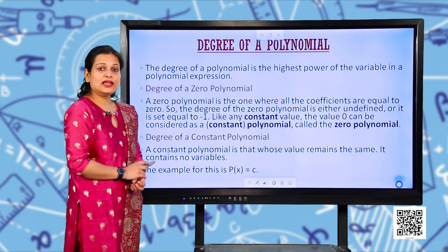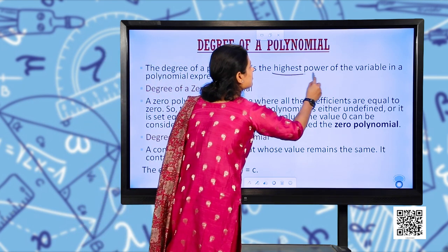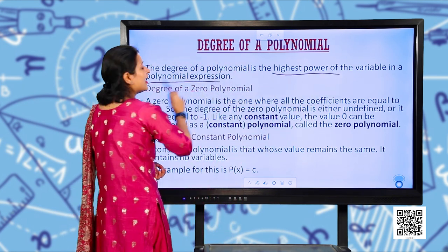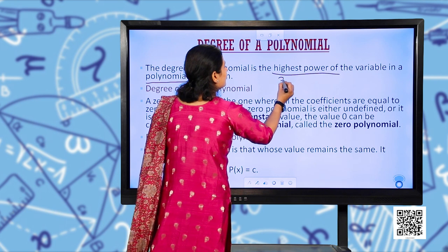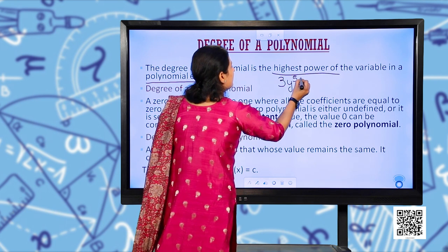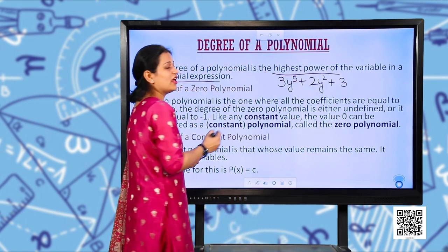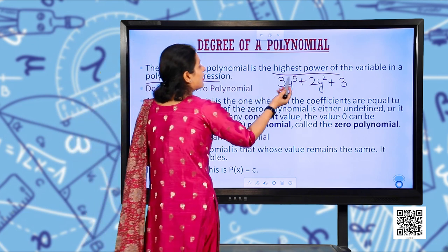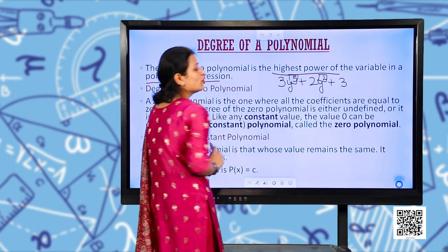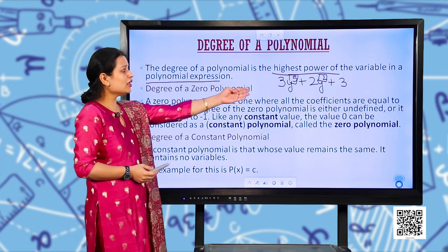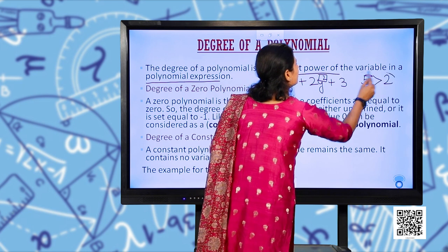Now let's look at the degree of a polynomial. The degree of a polynomial is the highest power of the variable in the polynomial expression. For example, if I have 3y⁵ + 2y² + 3, the variable is y with powers 5 and 2. The highest is 5, so the degree of this polynomial is 5.